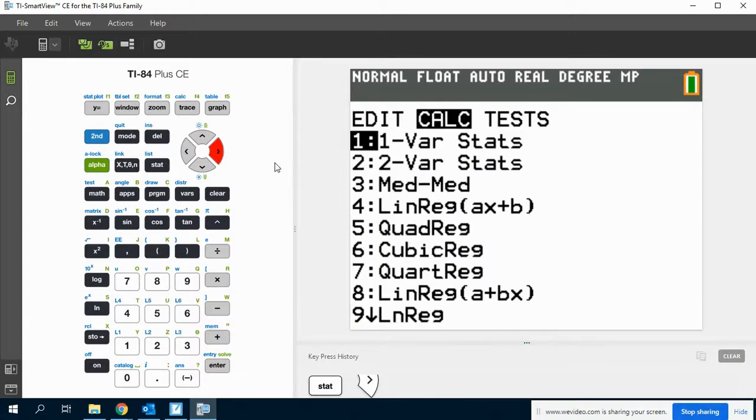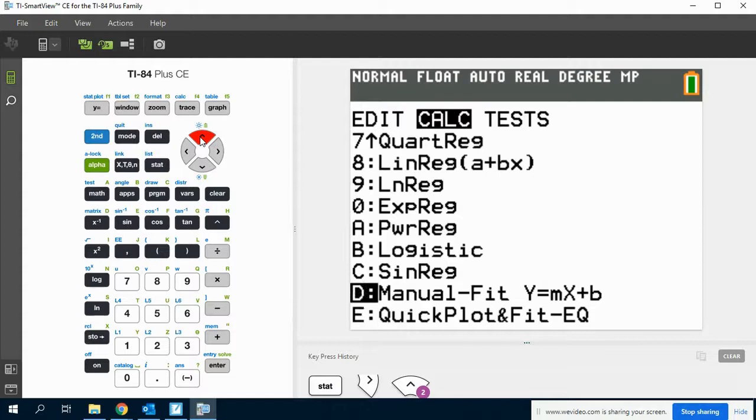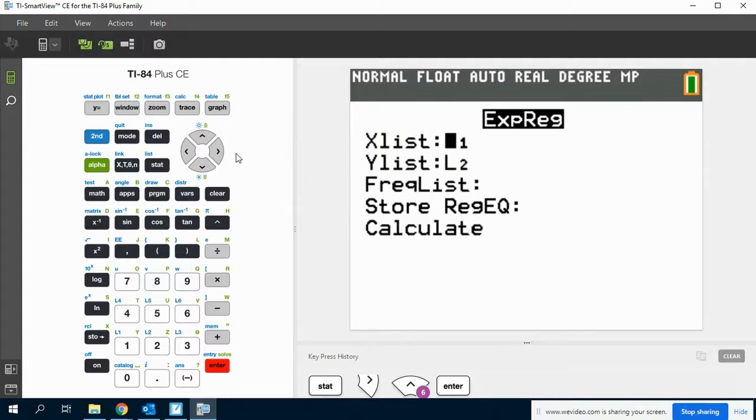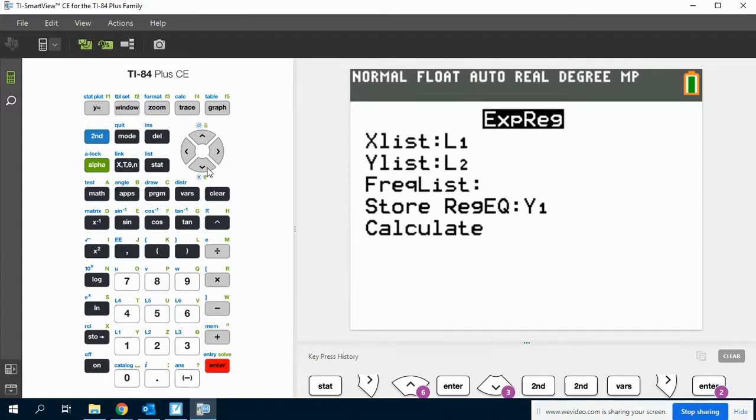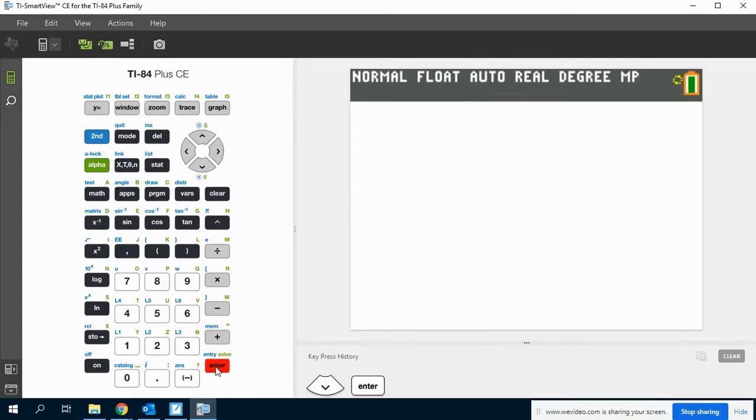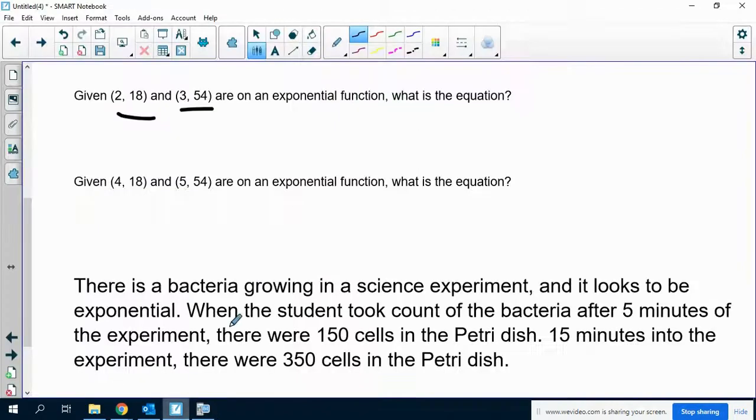And we have linear regression, quadratic regression, cubic regression, all those things. We're going to go to exponential regression, which is option zero. So exponential regression is option zero. We can store the equation, remember? So vars, yvars, store it as y1 if we want. And then calculate, and we'll end up with this function.